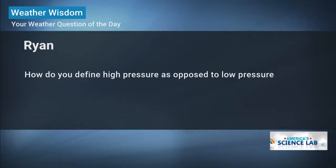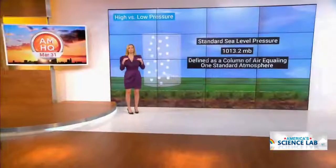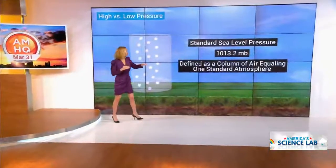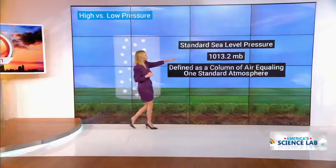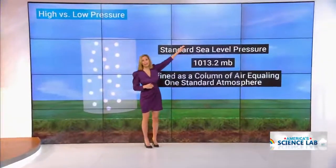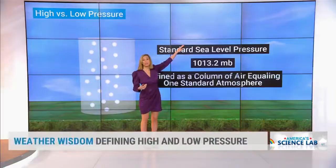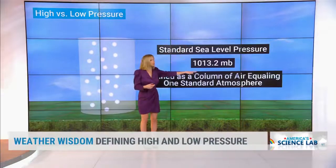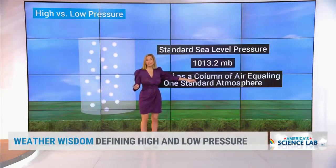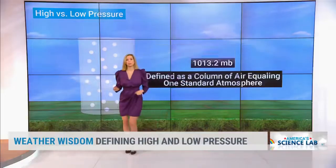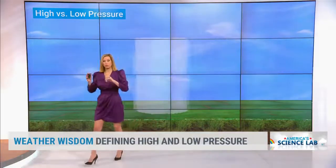What we're going to do is start off with standard sea level pressure: 1,013 millibars. Anything higher than that — say 1,040 — that would be high pressure. If you go lower than that, say 970 millibars, that would be considered low pressure.